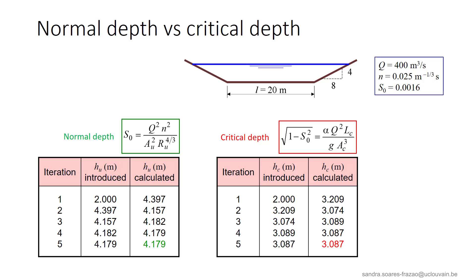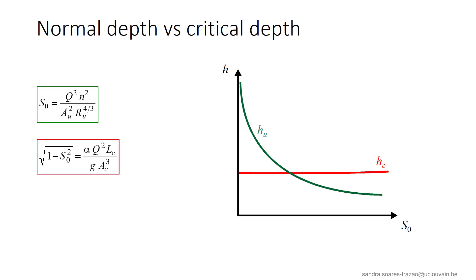Let us go back to our example with the trapezoidal channel. We have calculated the normal and critical depths, as recalled here. We observe that they are distinct, and the question now is how these two depths vary and according to which parameters. Let us first consider the influence of the bed slope S0. Using the two equations, we can represent the evolution of Hu and Hc as a function of S0. The normal depth varies a lot with the bed slope, while the critical depth remains almost constant, at least for usual bed slopes, for instance slopes less than 10%.